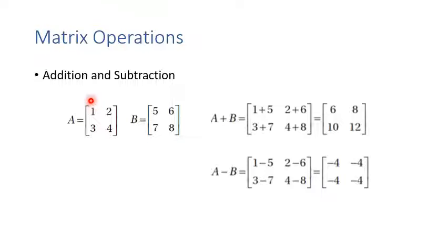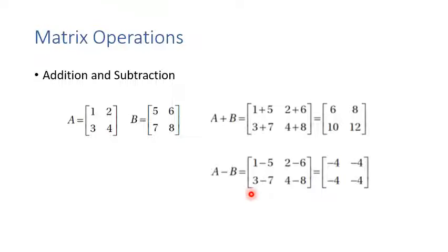For example, if matrix A is [[1,2],[3,4]] and matrix B is [[5,6],[7,8]], adding them gives [[6,8],[10,12]]. The entry A[1,1] plus B[1,1] is 6. For subtraction, A[1,1] minus B[1,1] is -4, so the subtraction result is [[-4,-4],[-4,-4]].